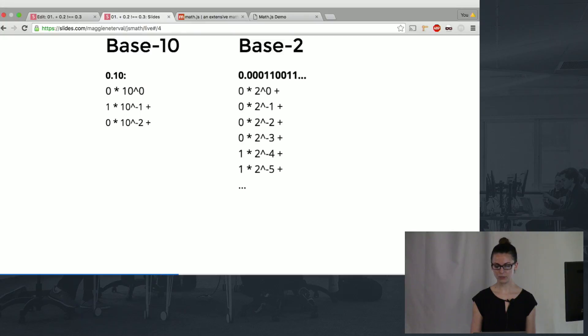On the other hand, 1 tenth while it's finitely represented as an expansion in base 10 cannot be finitely represented in binary. And this might seem strange but we don't think of it as strange when numbers can't be represented finitely in base 10. So for example 1 over 3 can't be represented as an expansion in base 10 system.